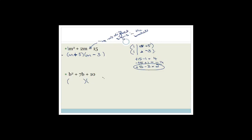Next: b² + 7b + 10. Coefficient of b is one, so we have b and b. The last sign is positive, so both bracket signs are the same — both plus. Factors of 10 are 10 and 1, and 5 and 2. We need them to add to 7: 10 + 1 = 11, doesn't work; 5 + 2 = 7, yes! So the answer is (b + 5)(b + 2).